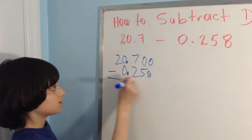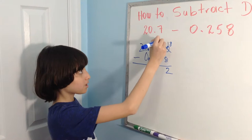Okay, 10 minus 8 is 2. That becomes a 9. 9 minus 5 is 4.